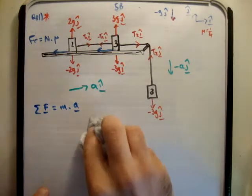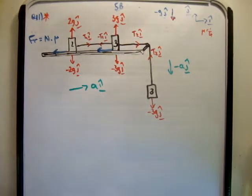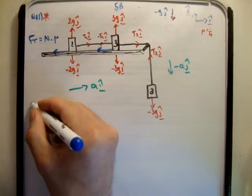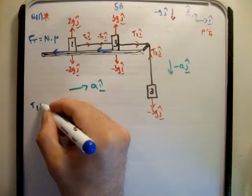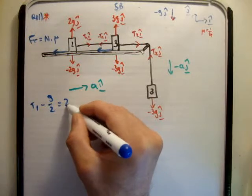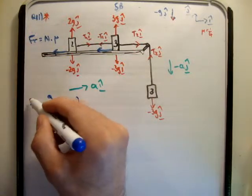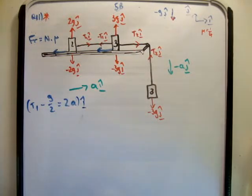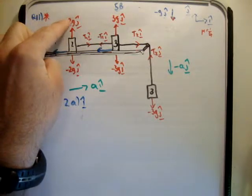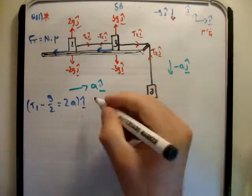So I'm going to do these pretty straightforward here. If you look at the 2 kilogram mass, you're going to have t1 minus the frictional force, which is g over 2, is equal to its mass times its acceleration vector. They're all in the i-hat direction. That's because the j-hat vectors, 2g j-hat and negative 2g j-hat, are just going to cancel. So I'm going to call that equation 1.